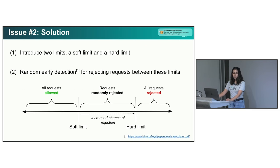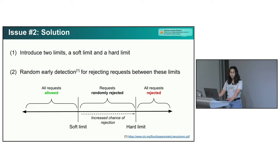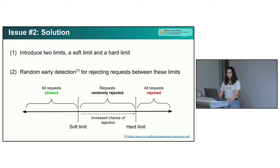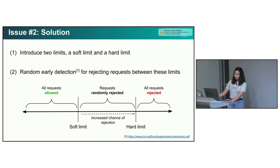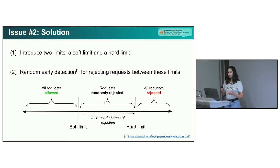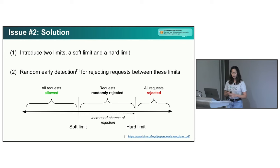Our solution was twofold. We needed a more elegant way to fail requests without hitting this kind of cascading failure all at once and causing a large-scale outage. So we introduced two metadata limits to replace the single one: a soft limit and a hard limit. Below the soft limit, all requests are allowed. Above the hard limit, all requests are rejected. But between the soft and hard limit, there is a warning zone where some requests might be rejected and some might not — we increase the chance of rejection based on how close the metadata size is to the hard limit. We're hoping users will notice the increase in errors before they hit a complete outage, and they can either increase the peer limit or reduce their metadata accordingly.